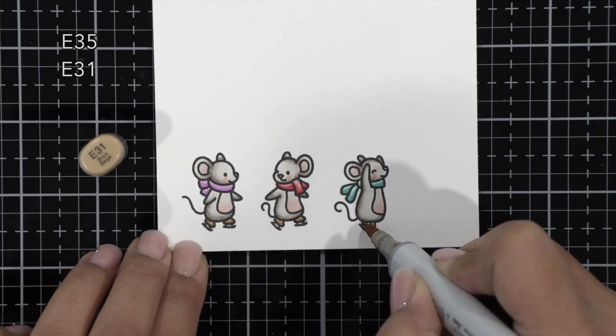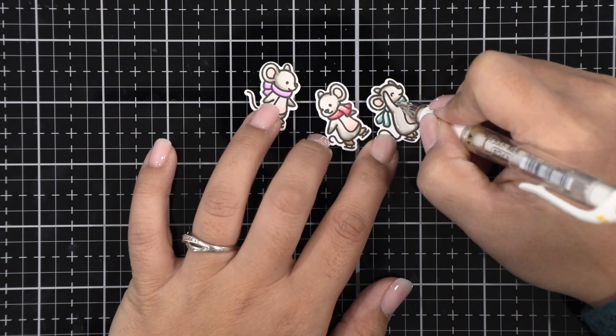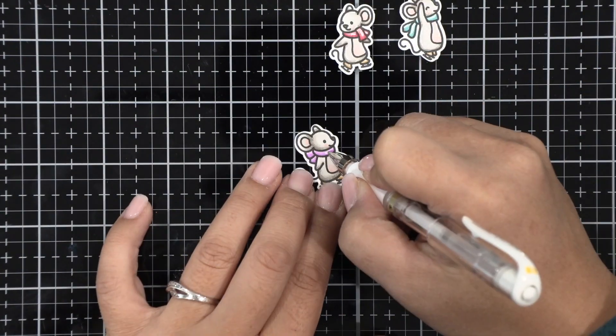On the skates, we're using E31 and E35. It's just a quick blend on those small areas, and then I also did W6 on the noses.